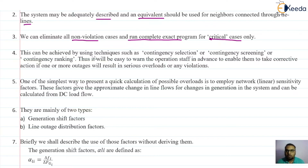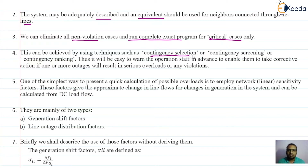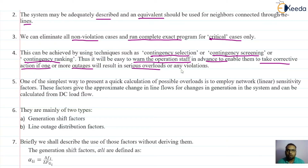This can be achieved using techniques such as contingency selection. We need to decide which contingency is going to create the critical condition or which is going to introduce emergencies in the system, and which contingencies are not going to introduce any violations. Accordingly, we can bifurcate them and consider only the contingencies which are severe or problematic for the system. These techniques include contingency selection, contingency screening, or contingency ranking. This way it will be easy to warn the operating staff in advance to enable them to take correct action if one or more outages will result in serious overload or any violation.